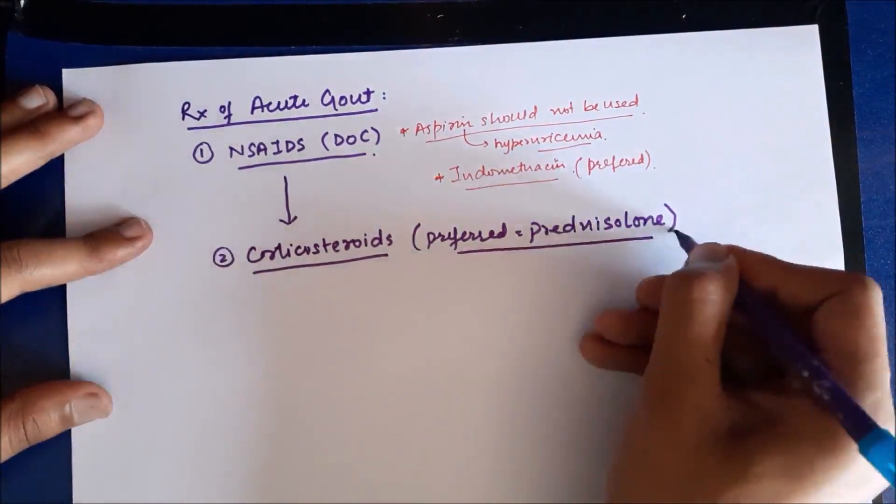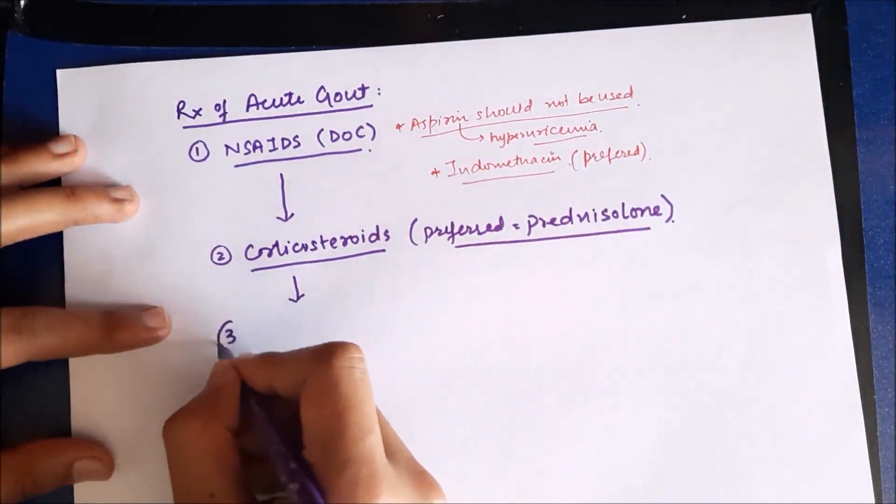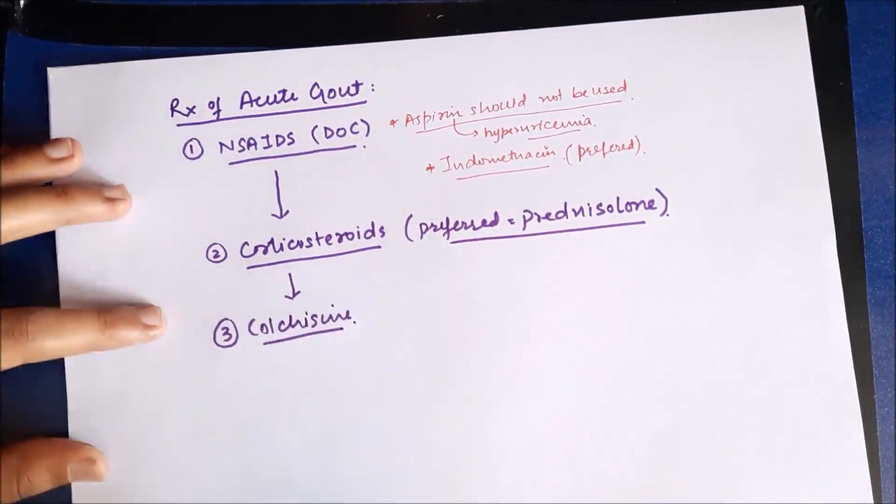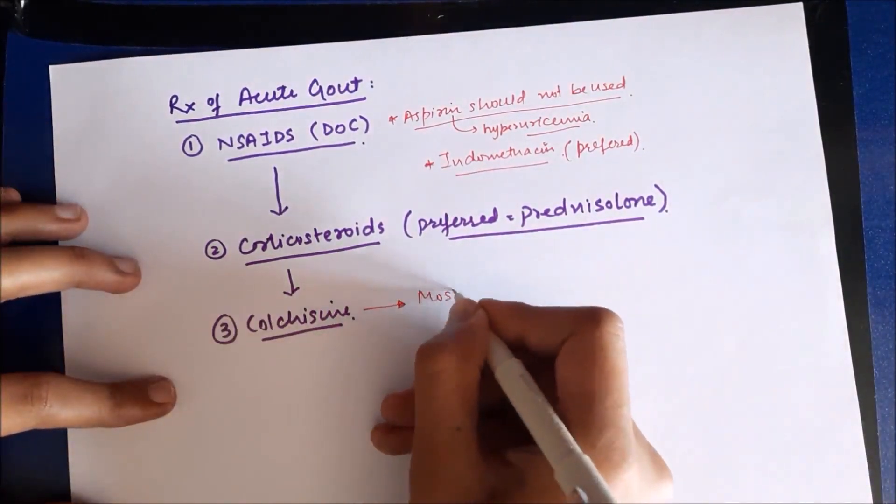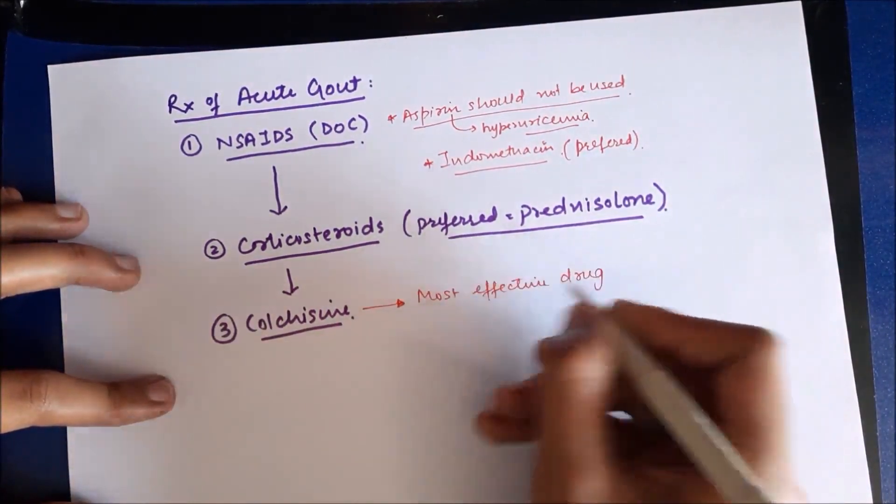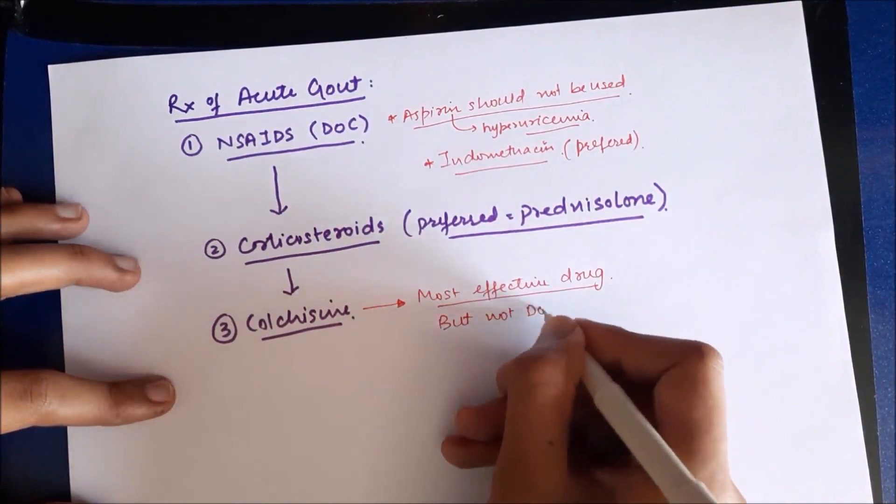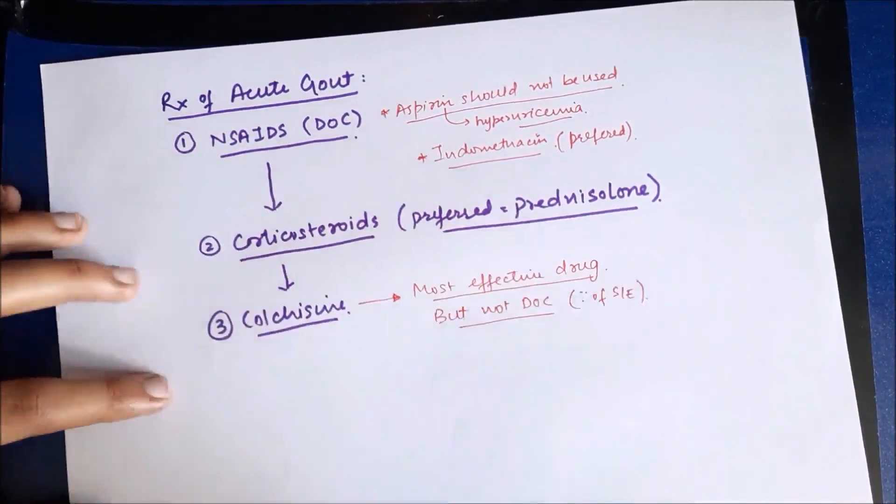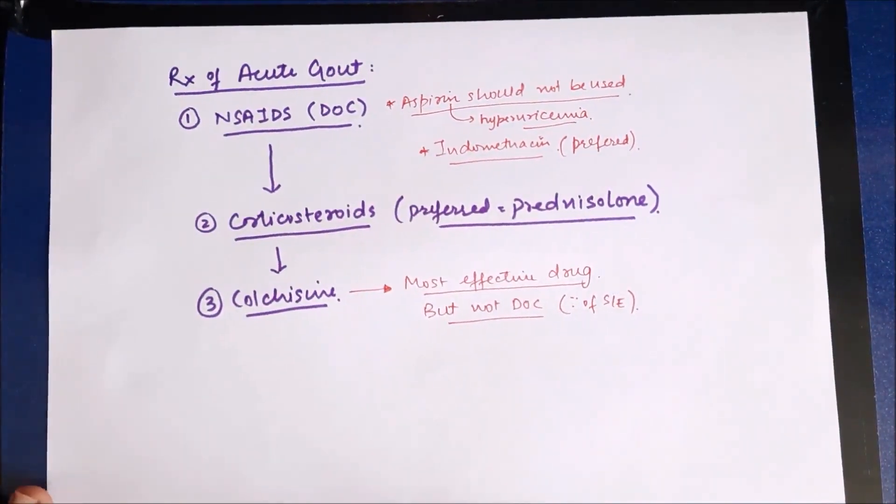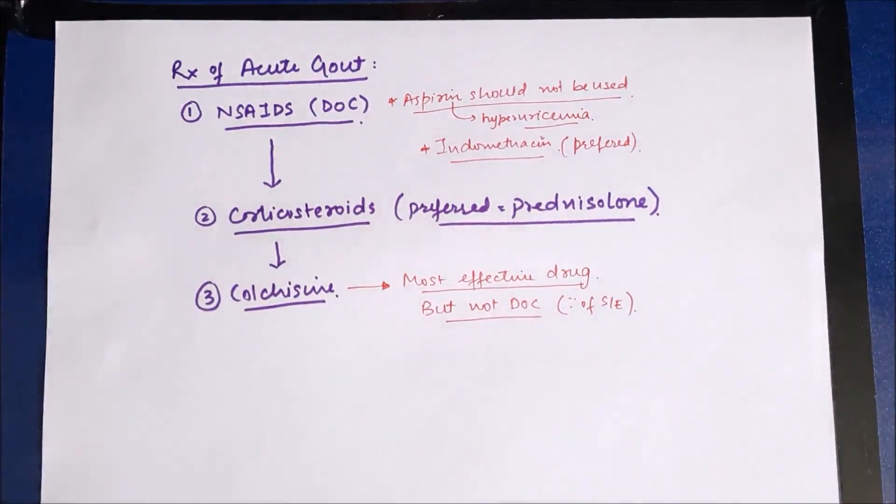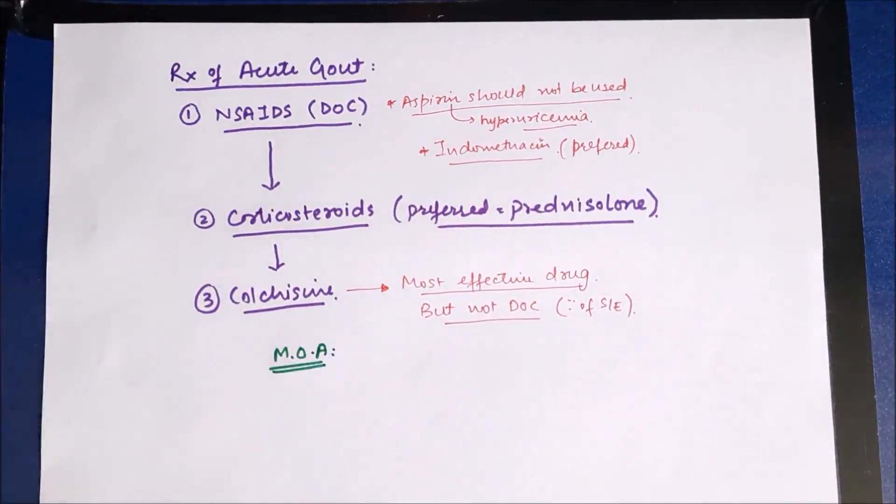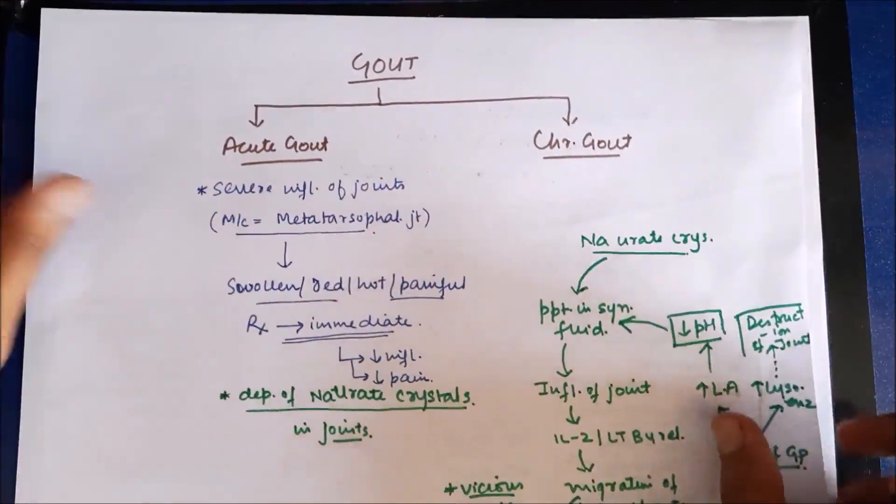If the patient does not respond to corticosteroids as well, then we use colchicine. Colchicine is the most effective drug for the treatment of acute gout. However, it's not the drug of choice because of various side effects of colchicine. It's not a safe drug, so let us understand the mechanism of action of colchicine.